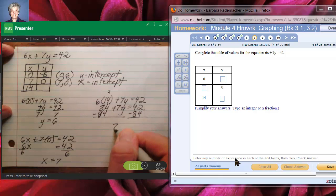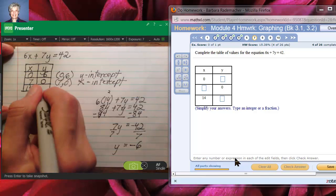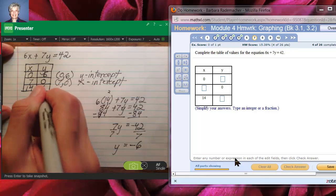Now subtract 84 from both sides of the equation or add negative 84. Same thing. We'll have 7y equals negative 42. Then when we divide both sides by 7, we'll get y equals negative 6. So if x is 14, y is negative 6.